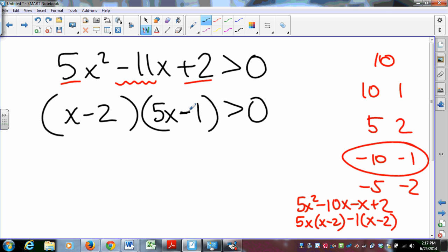Well, the zero product property doesn't apply here, because I don't have a product of zero. I have a product that's positive. So I have to think way, way back. Old school. How do I get a product that's positive? Well, I could have this one be positive and this one be positive, or I could have this one be negative and this one be negative, and those are just tricky to keep track of. So instead, let's use our friend the number line.